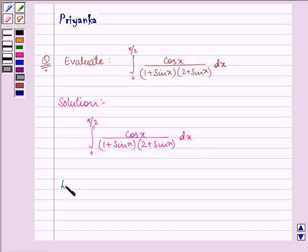Now here first of all let I be equal to integral cos x upon 1 plus sin x into 2 plus sin x dx.